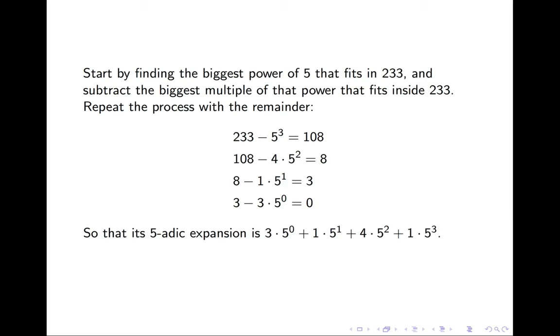So our p-adic expansion is then 3 times 5 to the 0 power plus 1 times 5 to the 1st power plus 4 times 5 squared plus 1 times 5 cubed. This can also be written as 3,1,4,1.